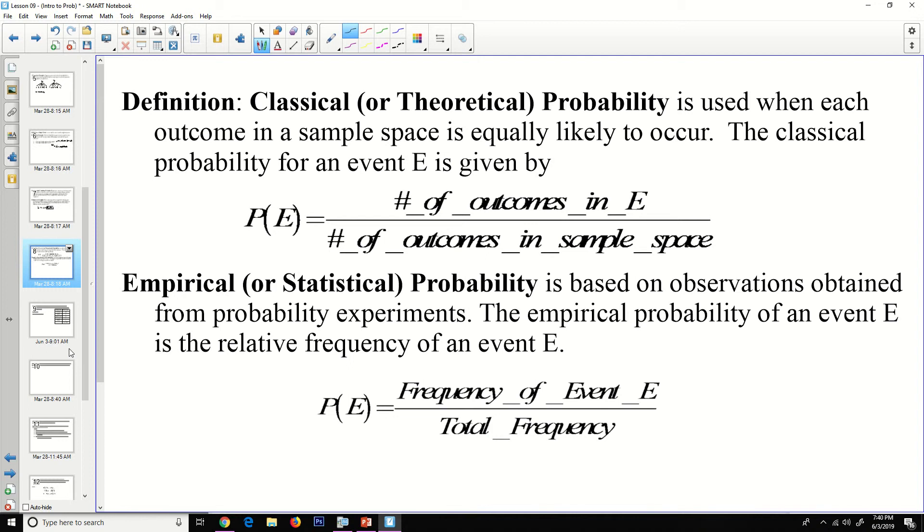Definition of classical or theoretical probability is used when each outcome in a sample space is equally likely to occur. The classical probability of an event E is given by: number of outcomes in E over the number of outcomes in the sample space. Empirical or statistical probability is based on observations obtained from probability experiments. The empirical probability of event E is the relative frequency of an event E. And so the probability of E is the frequency of that event over the total frequency.